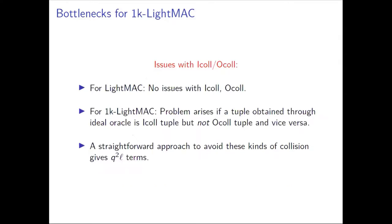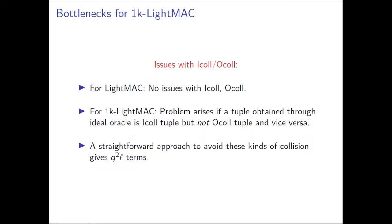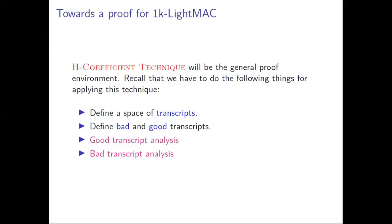One straightforward approach is to avoid icoll and ocoll, but this gives q²·L many terms in the numerator, because there are q·L many choices for internal inputs and q many choices for the final input — giving q²·L collision choices. The denominator is always 2^n, so we cannot get rid of the L term this way. This straightforward approach does not work, so we have to think differently.